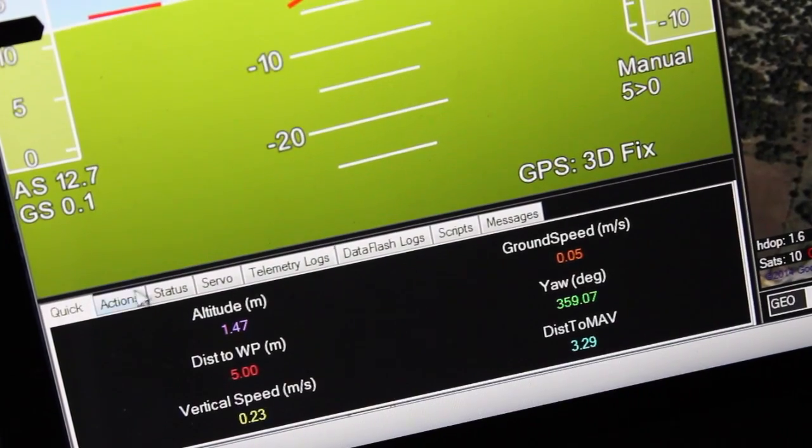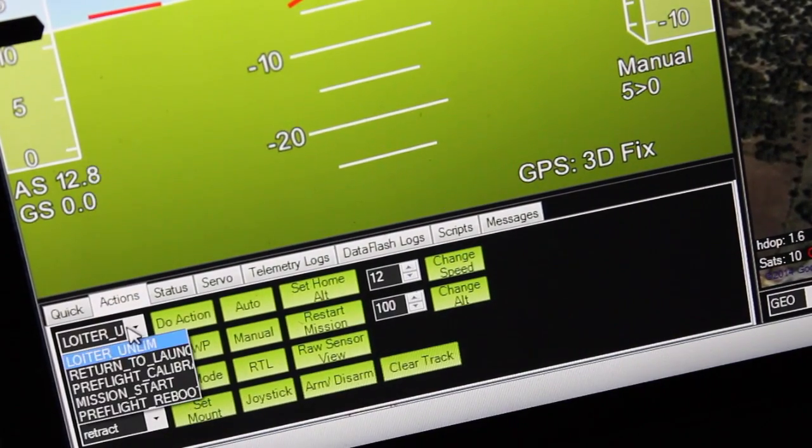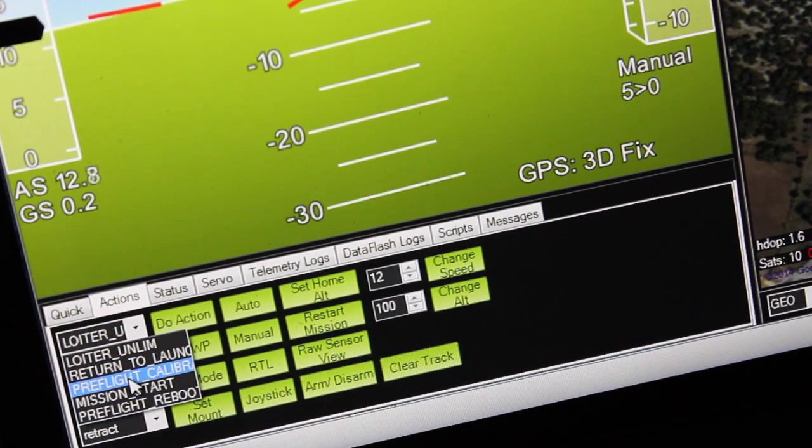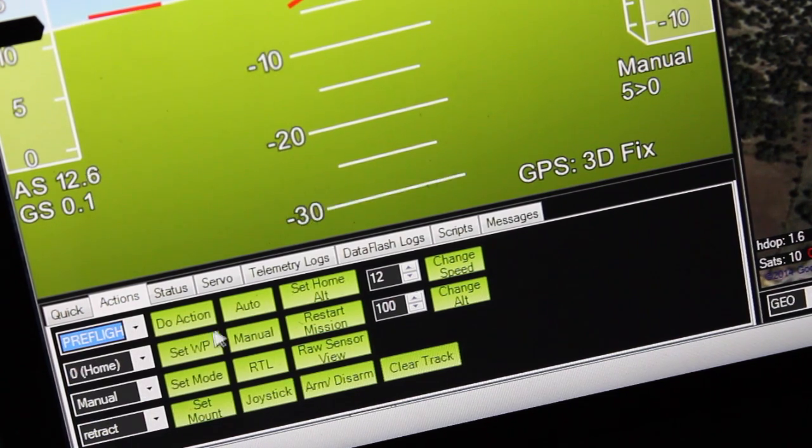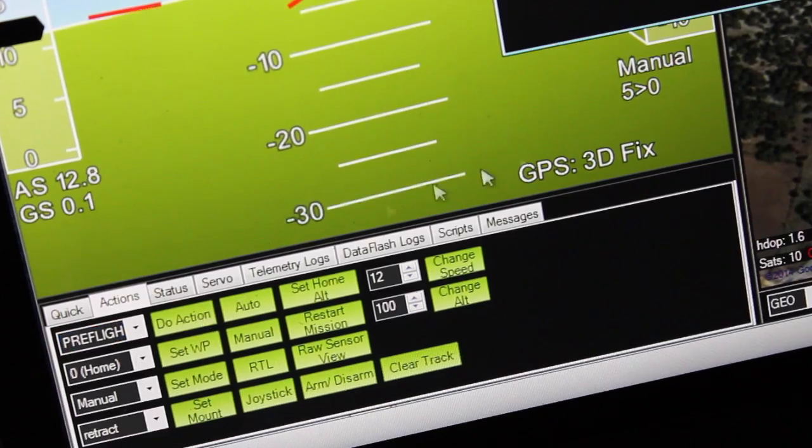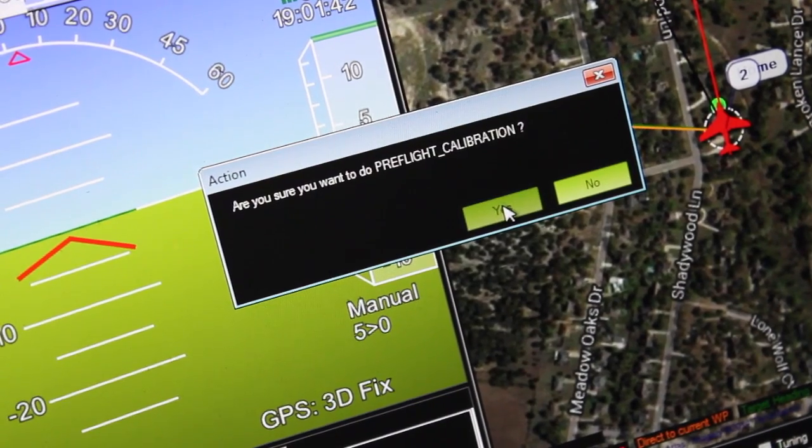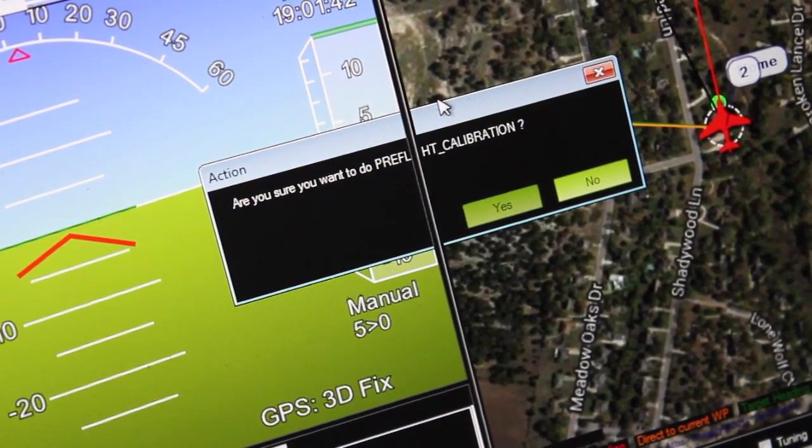So on your flight data screen you want to go down to the actions tab and then do a pre-flight calibration. So we'll select that. We'll click do action. It'll ask us to confirm so we'll click yes and it'll do that calibration.